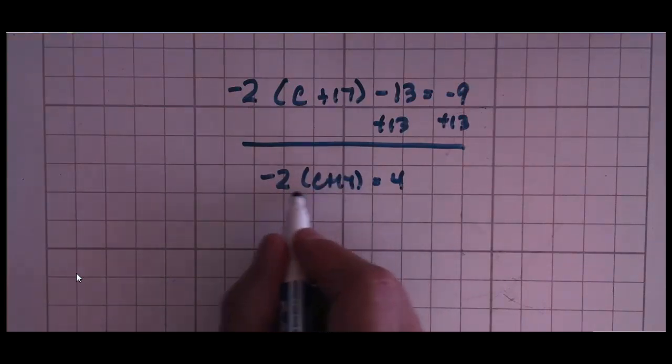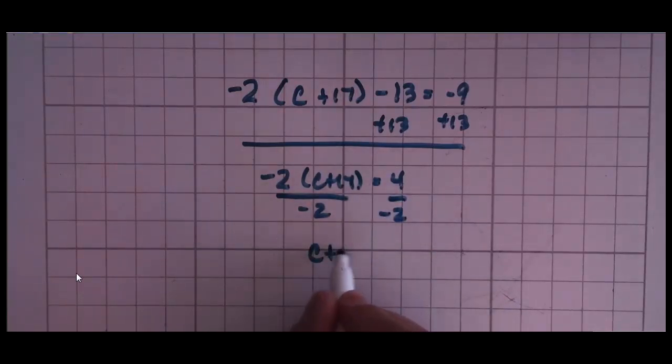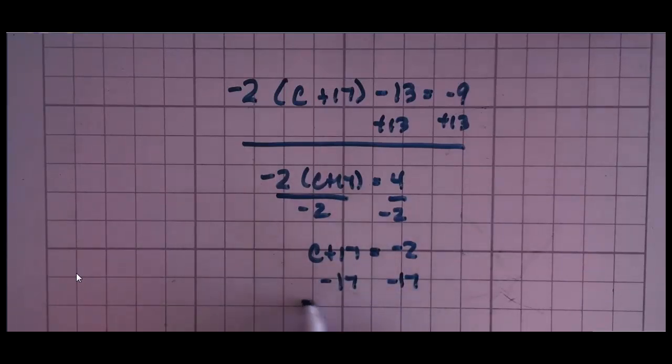Now because this whole thing is being multiplied by negative 2, we're going to divide the whole thing by negative 2 first, so you end up with c + 17 = negative 2. Now it's a much easier problem to solve. Simply subtract 17 from both sides of the equation and you get c = negative 19. Again, it's considered an advanced equation because there's multiple steps you have to do along the way.